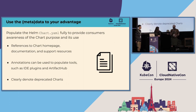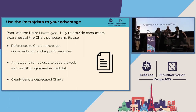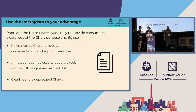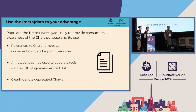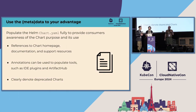The Helm chart, as you saw in that structure, has a number of components. The topmost one is the Chart.yaml — it's the tool to tell Helm what this thing is and how it's used, mostly to communicate that to users. There are references to the chart homepage, documentation, and support resources that should all be linked from your Helm chart. There are also annotations, which are fairly freeform.